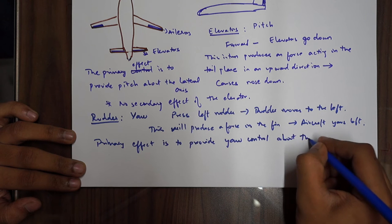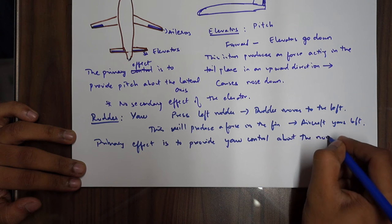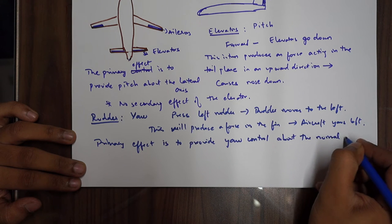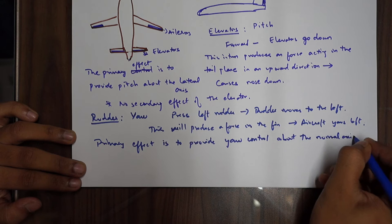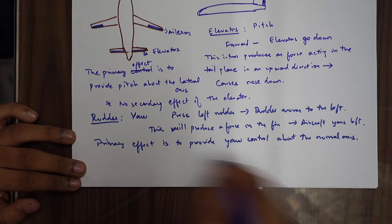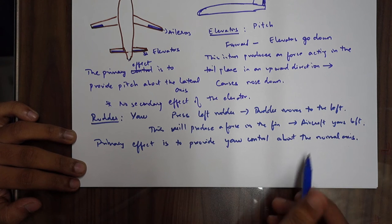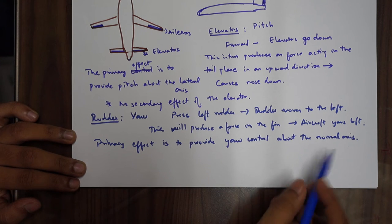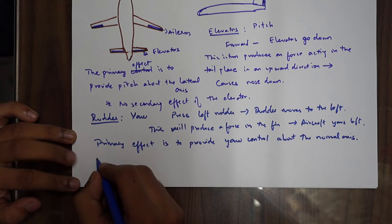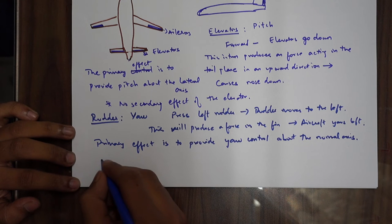The primary effect of the rudder is to provide yaw control about the normal axis. Please note these down — they are very important and could be confusing at times. Now the rudder has a secondary effect.